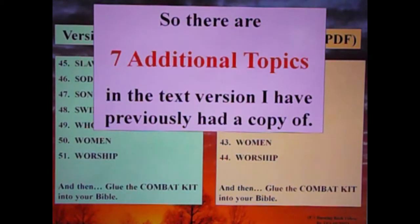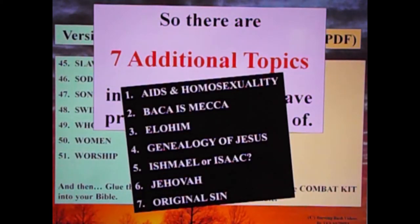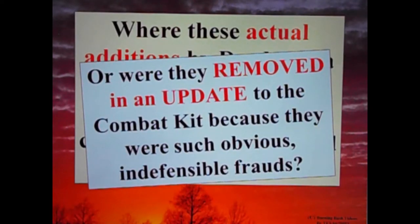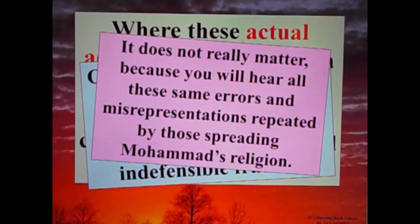So there are seven additional topics in the text version I previously had a copy of: AIDS and Homosexuality, Bacca is Mecca, Elohim, Genealogy of Jesus, Ishmael or Isaac, Jehovah, and Original Sin. Were these actual additions by Didat in a second printing? Or just some overachiever creating a superset based on the combat kit and adding issues of his own particular penchant? Or were they removed in an update because they were such obvious indefensible frauds? It does not really matter because you will hear all these same errors and misrepresentations repeated by those spreading Mohammed's religion.